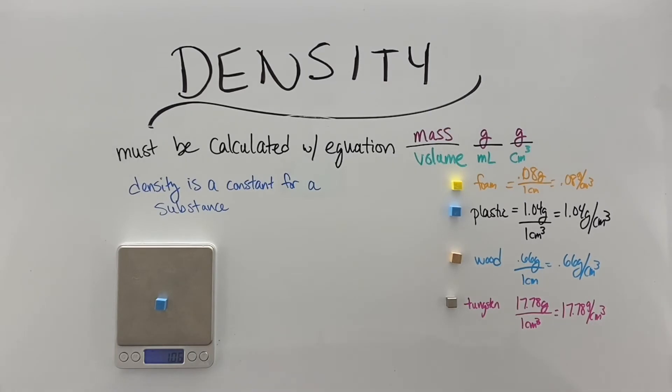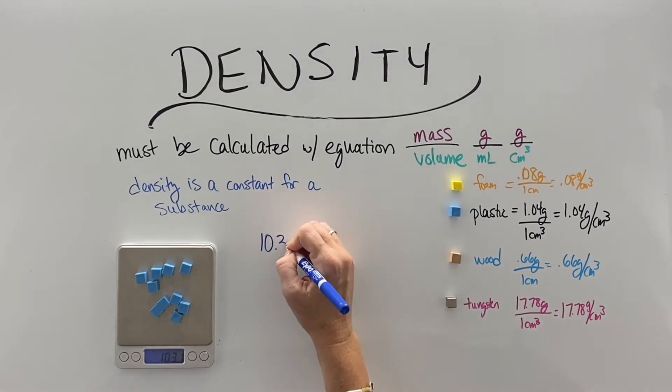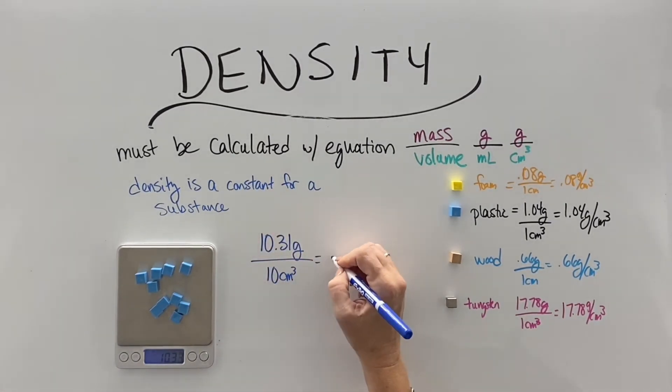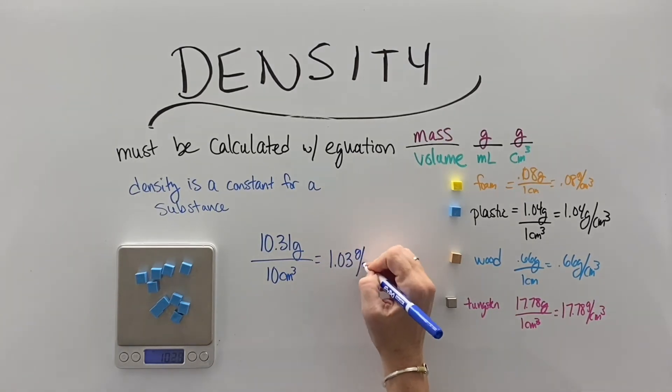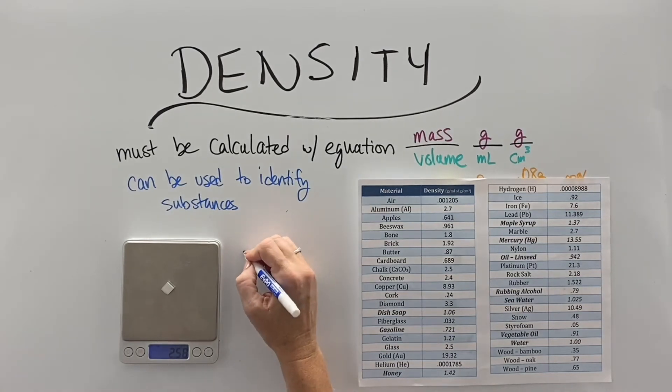Now that density is a constant for a substance. So as I add plastic blocks to this scale, the mass is going to increase proportionate to the volume at the rate of the density. So one block was 1.04, but 10 blocks is 10.03. Now I know you're saying it's not the same, but these blocks aren't 100% perfectly made, so it's pretty darn close. So that substance has that density always.